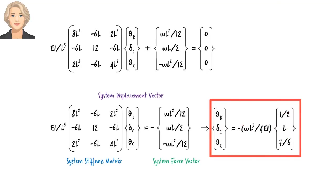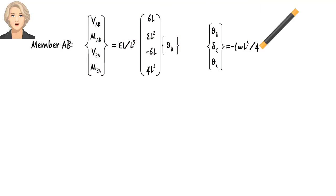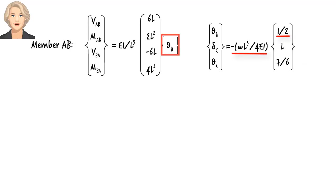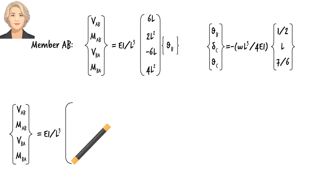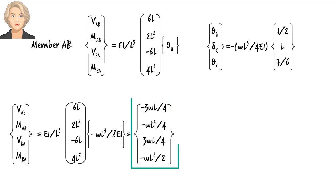Now that we have determined the unknown slopes and deflection, we can substitute them back into the member-specific equations in order to find the member end forces. For member AB, here are the equations for member forces and here is the solution vector. Substituting this value for theta_B, we get these member forces. Let's use them to draw the member's free body diagram.